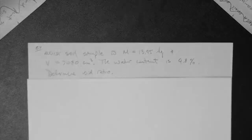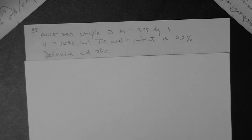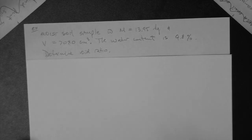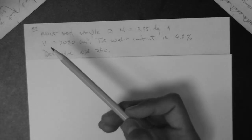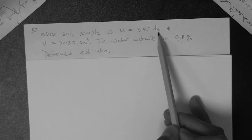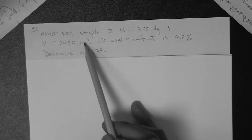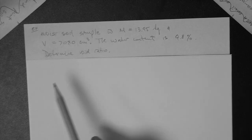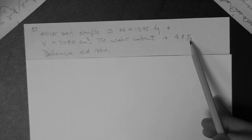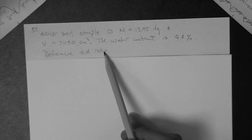Let's do a phase relationship problem example. The problem statement is as follows: we have a moist soil sample with a mass of 13.95 kilograms, and its volume is 7,080 cubic centimeters. The water content of the sample is 9.8%, and we want to determine the void ratio.